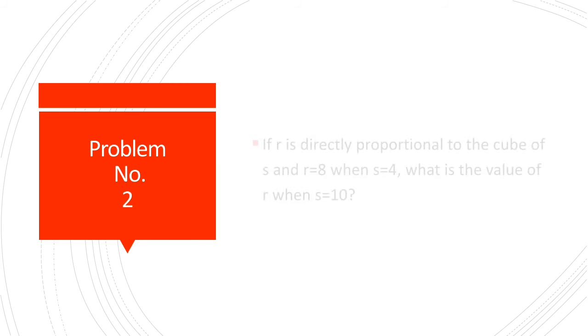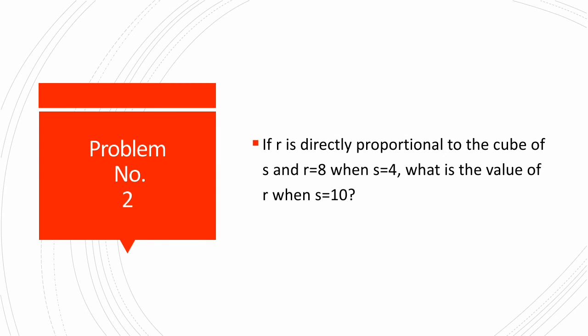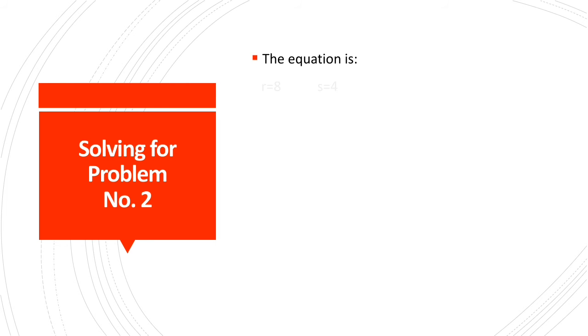Problem number 2: If r is directly proportional to the cube of s and r equals 8 when s equals 4, what is the value of r when s equals 10? First, we are going to write the equation. The equation is written as r equals k times s cubed.